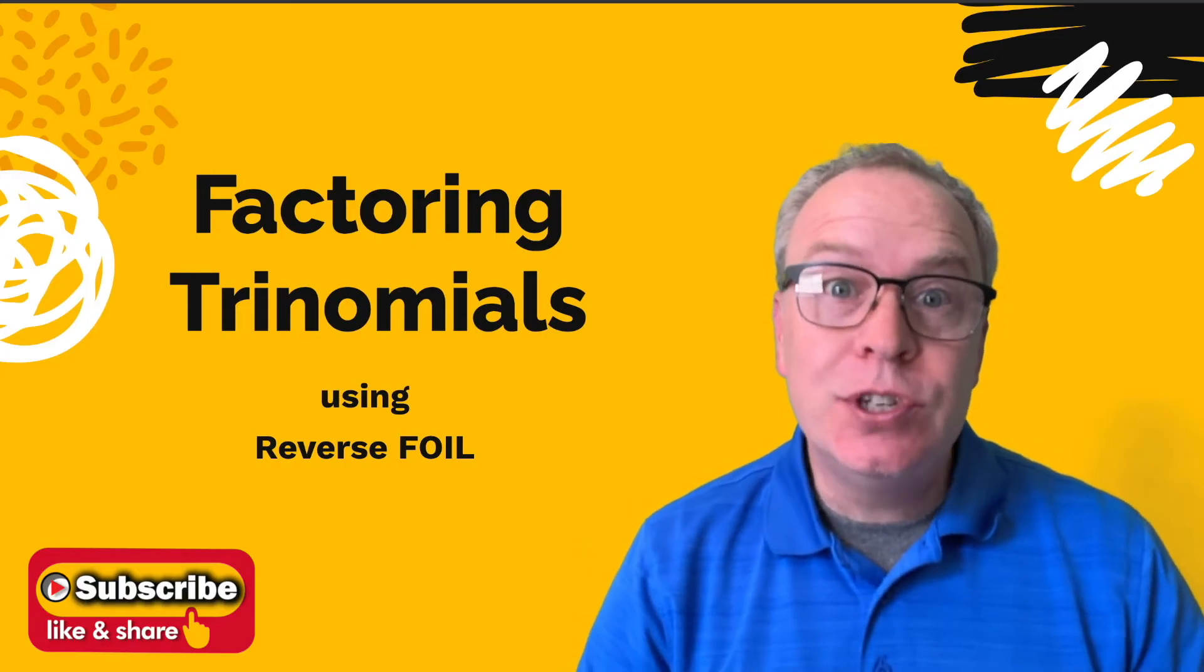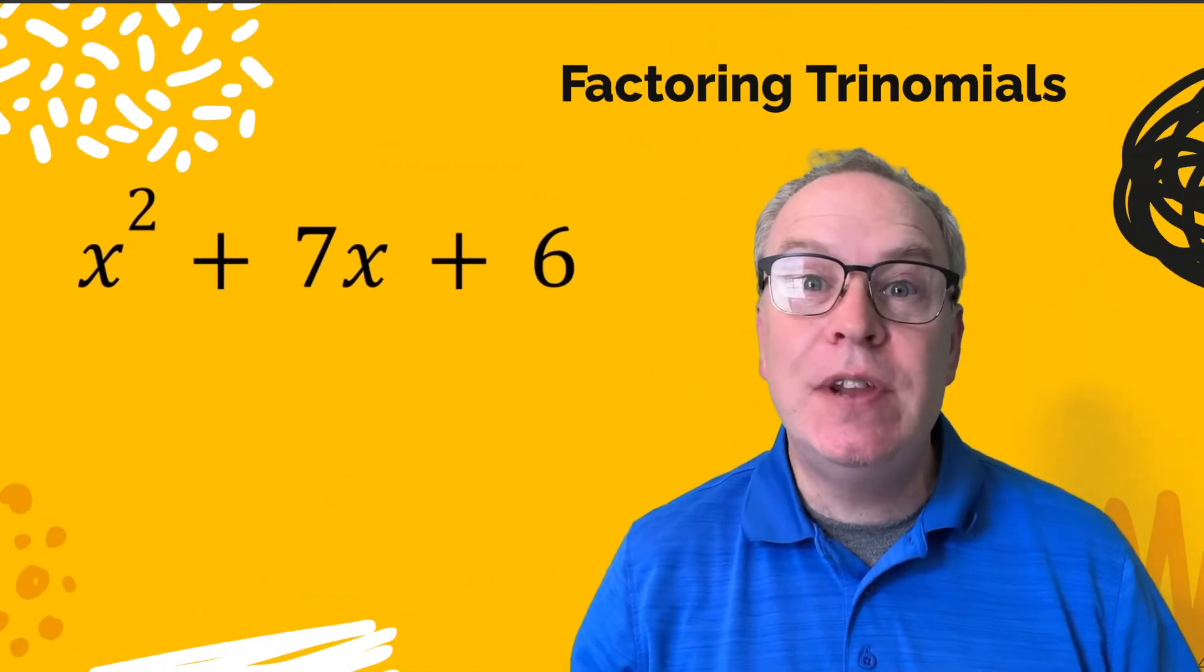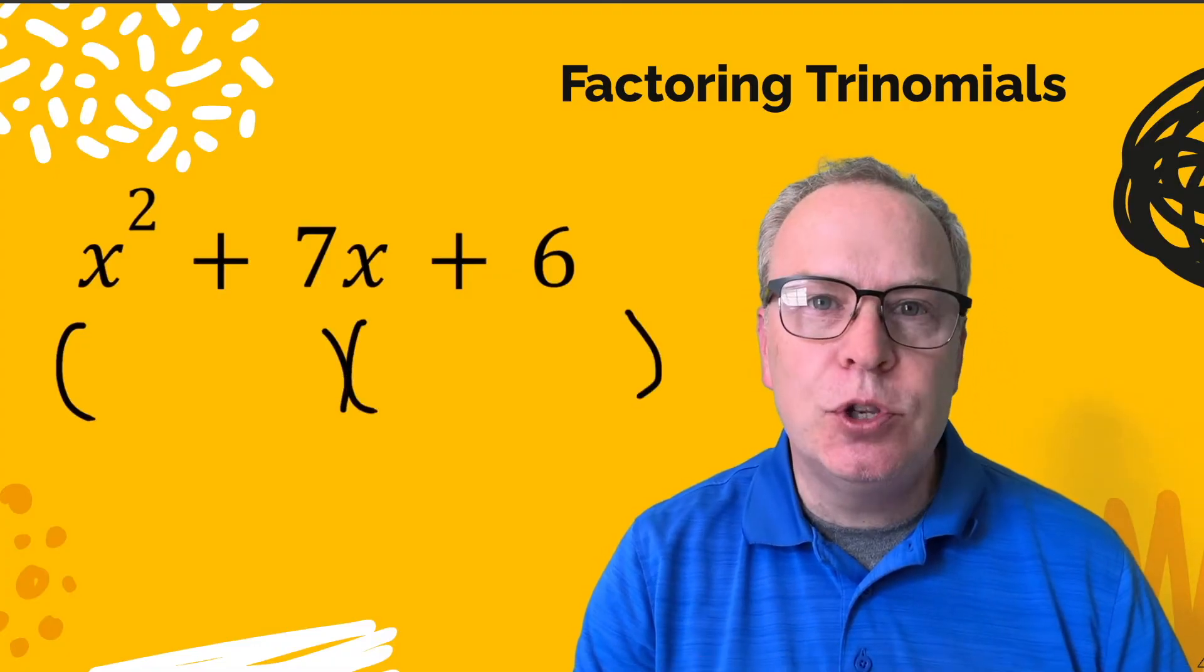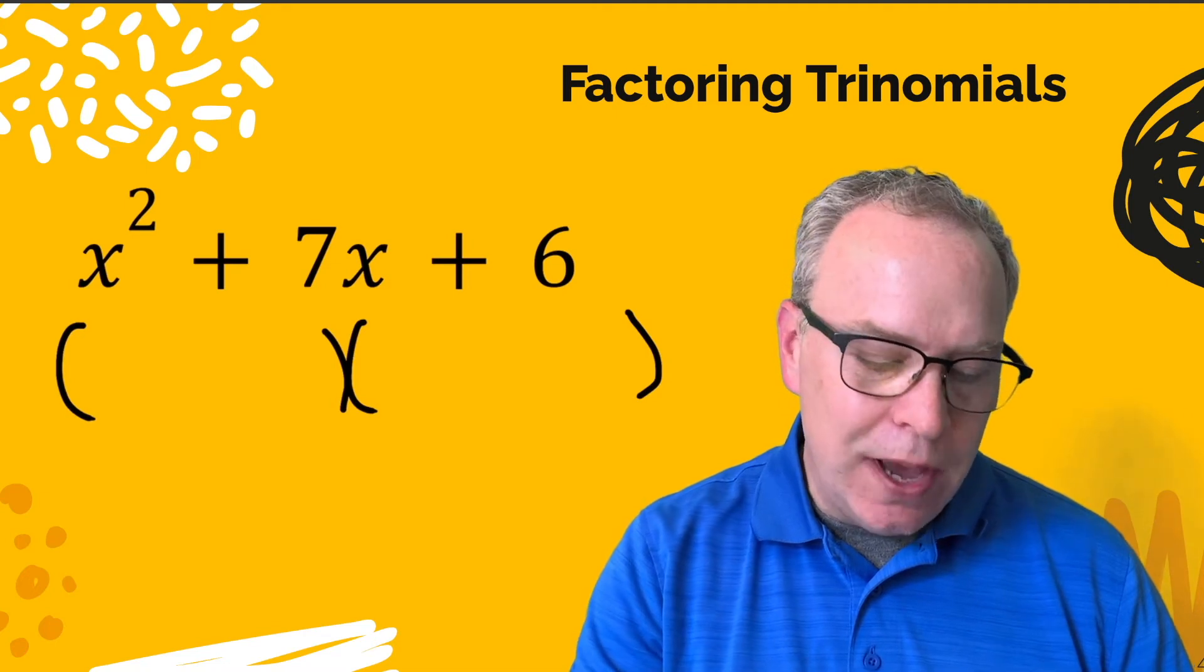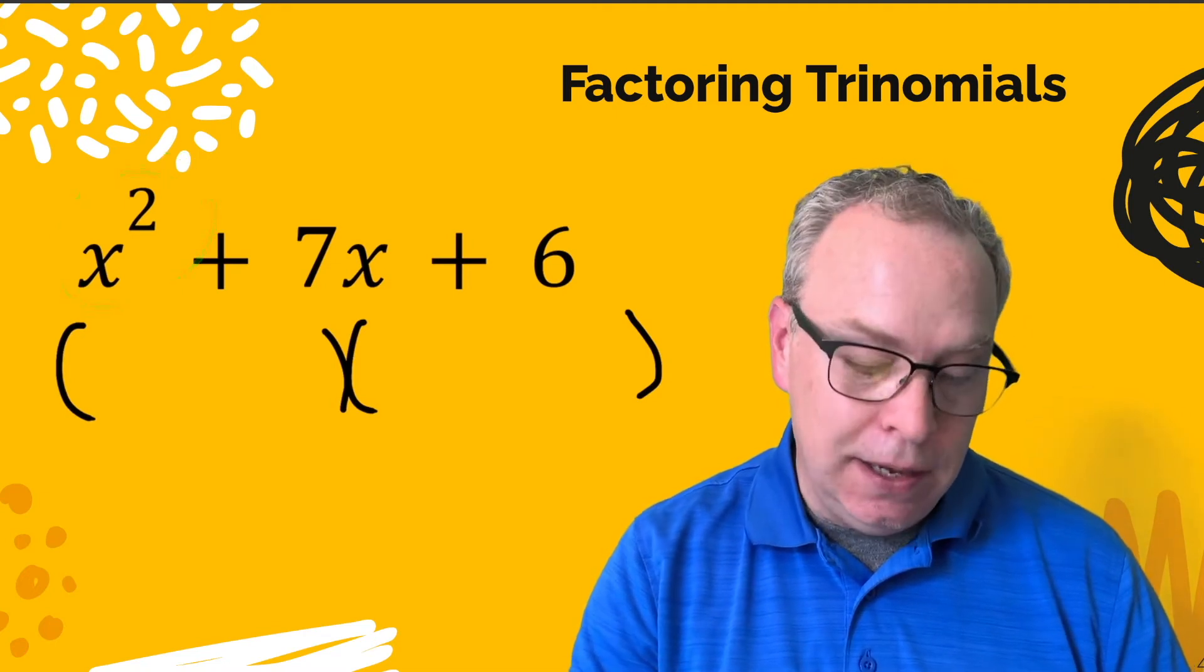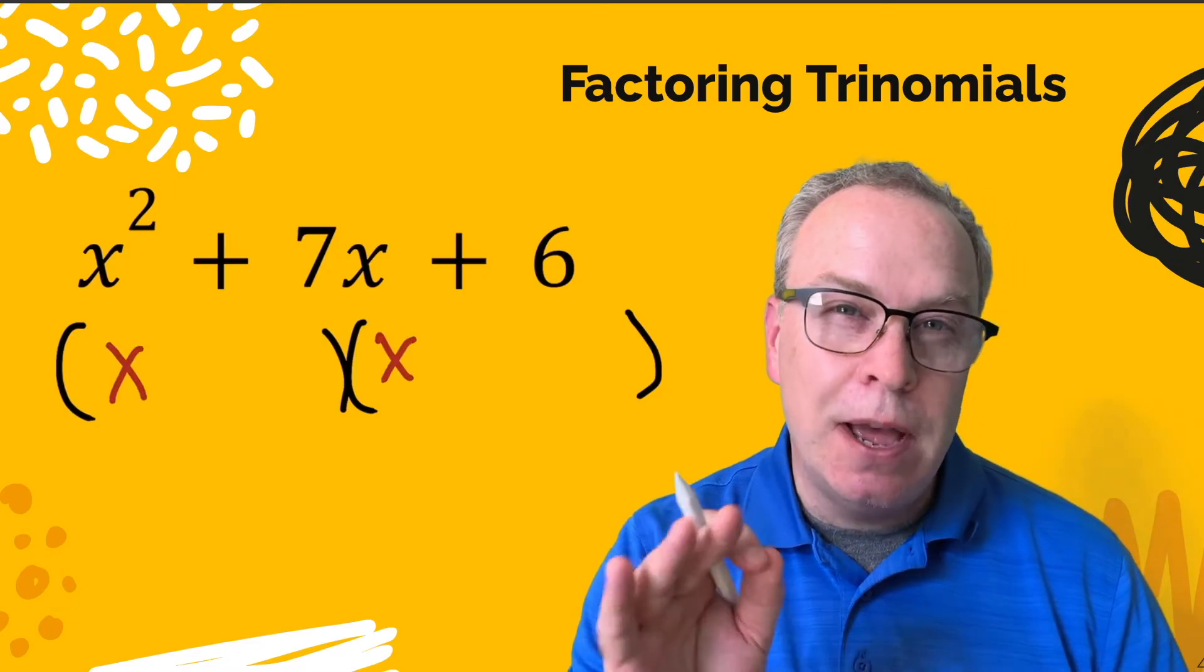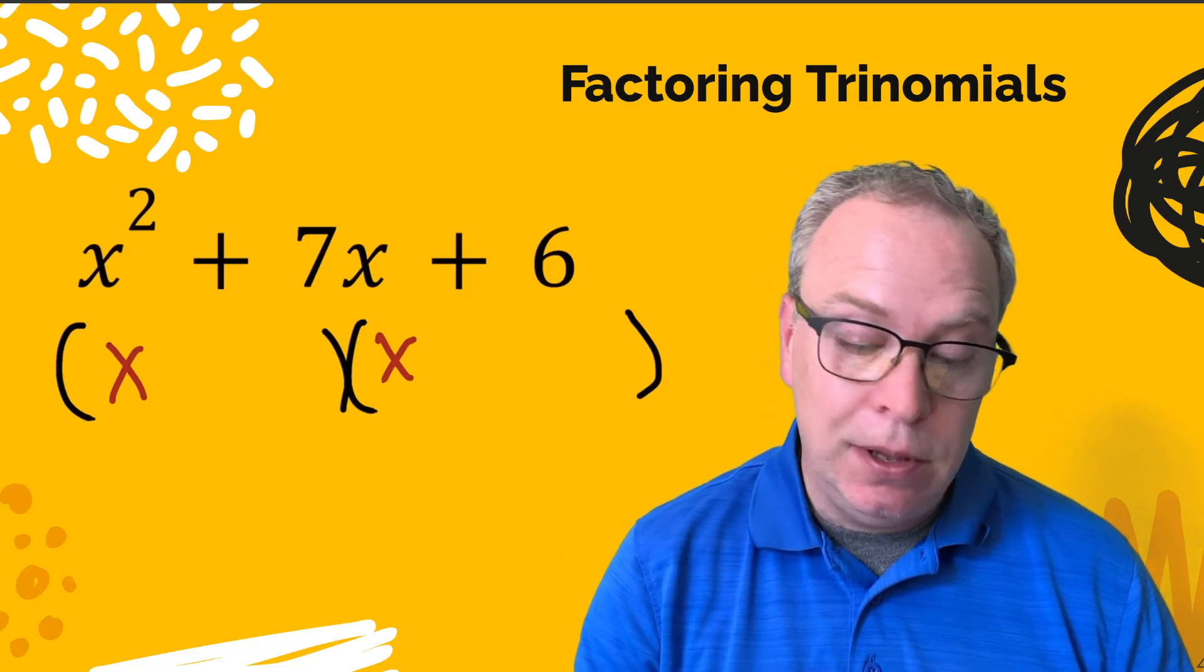So let's look at the first example. Here we have a trinomial x squared plus seven x plus six and we're going to try to factor this into two binomials. So I'm going to go ahead and put those parentheses there because that kind of gets the ball rolling. Now the only way you're going to make x squared is by putting an x and an x in those two spots. Remember FOIL. Those have to multiply to be x squared. So that's the only possibility there.